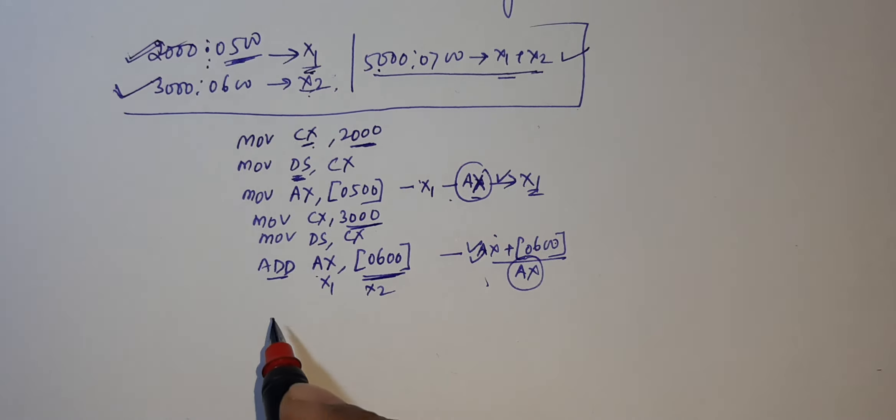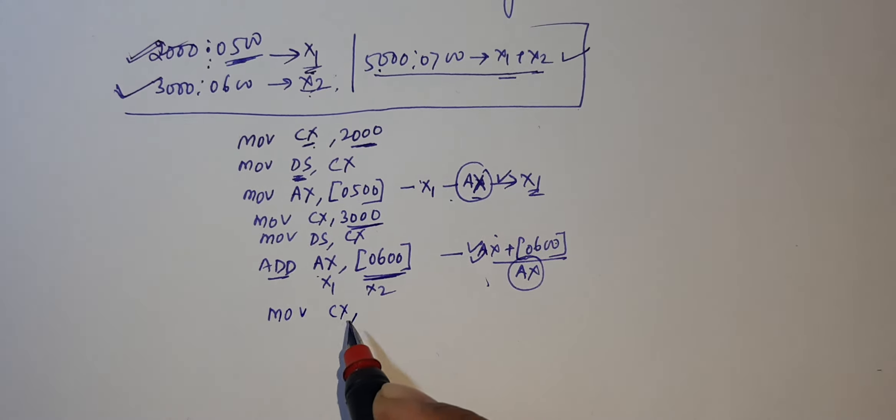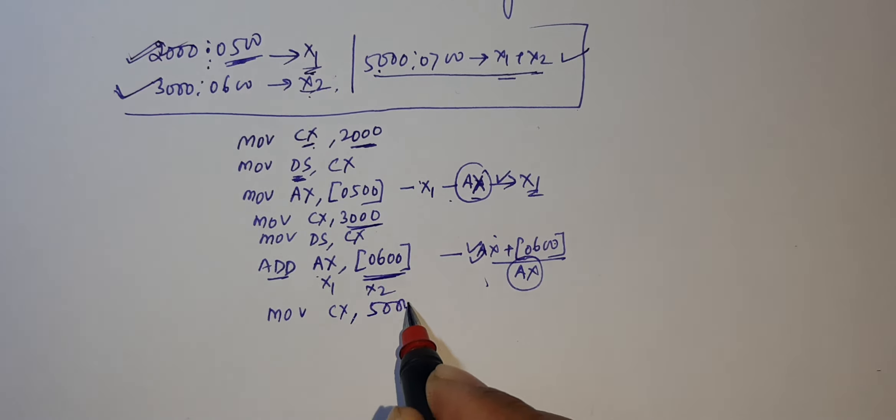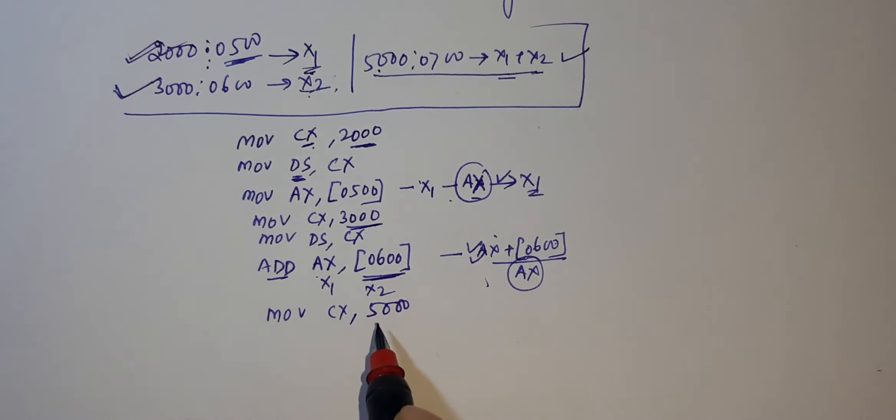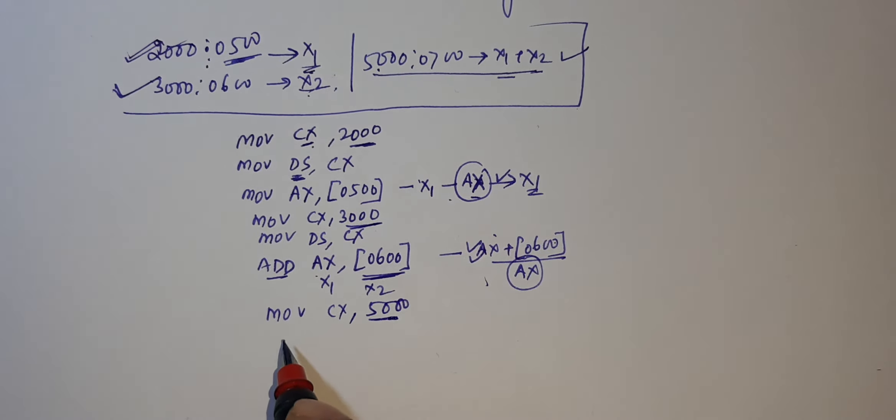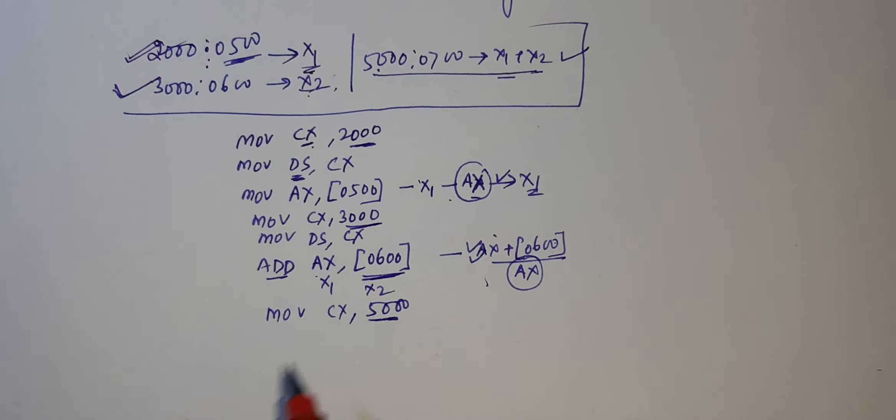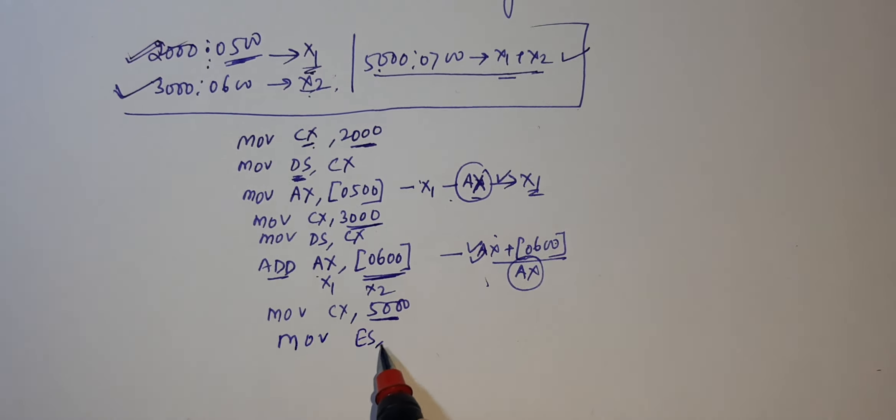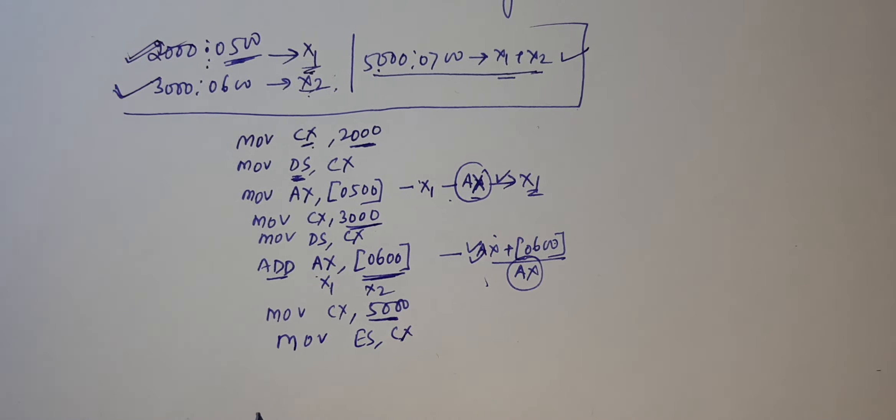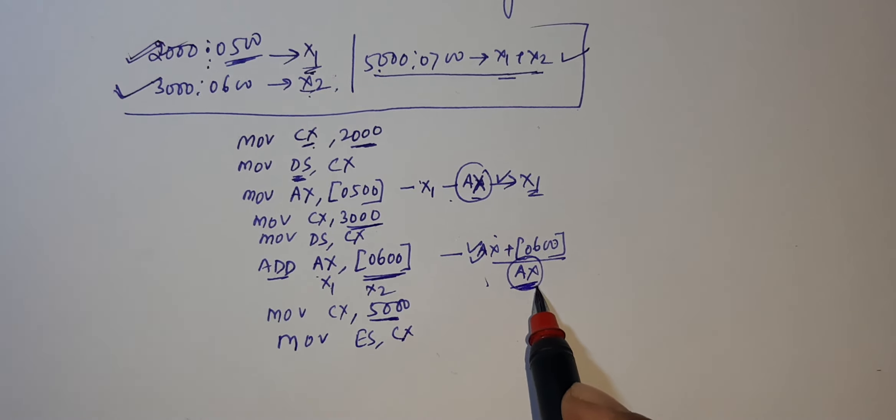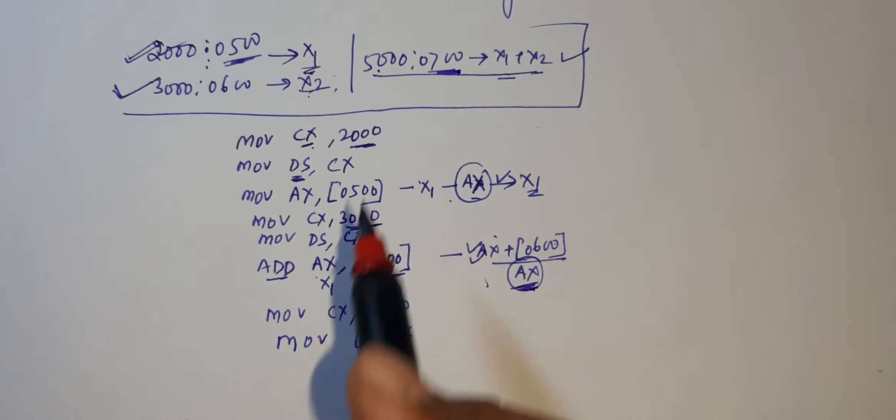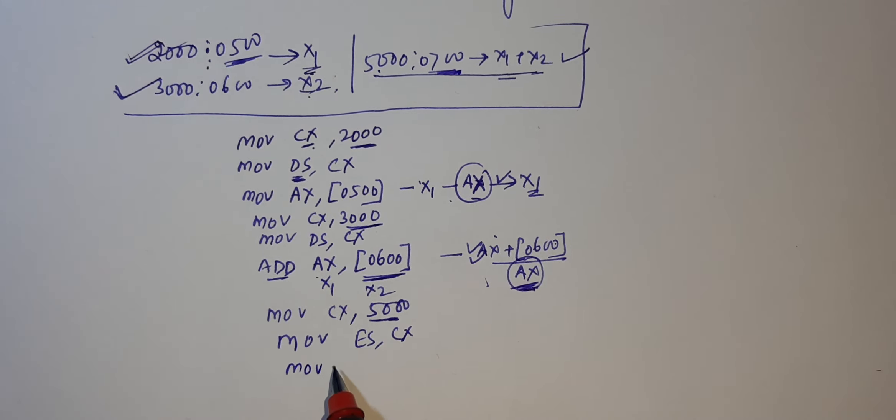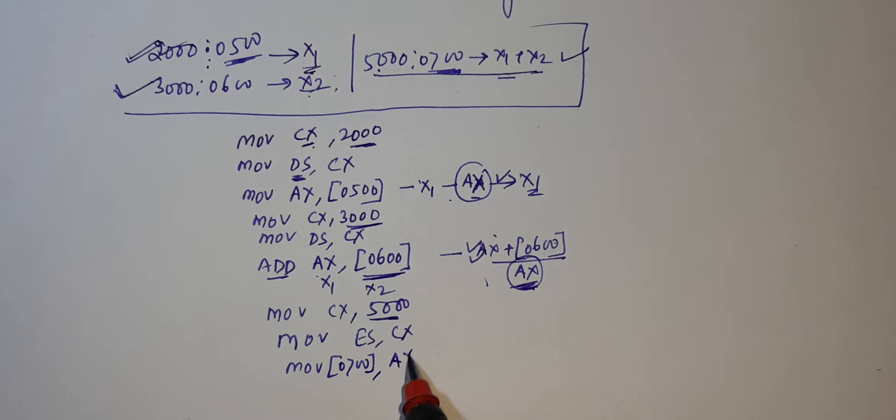Now what we have to do? We have to store output here. Again, same process: move CX, 5000. Here we have to store because we already have data segment. So move ES, CX. To store output, move [700], AX, and the final output is stored.